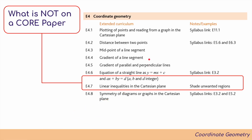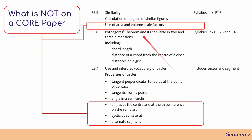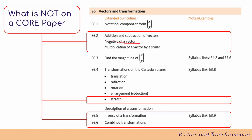For topic four, Coordinate Geometry, linear inequalities in the Cartesian plane — that is, shading unwanted regions — have been added for extended. In topic five, Geometry, the first part remains the same, but the second part adds the use of area and volume scale factors. When covering properties of circles, three additional elements are added for extended. For topic six, Vectors and Transformations, we add addition and subtraction of vectors, negative of a vector, multiplication of a vector by a scalar, and the transformation stretch. Inverse transformations and combined transformations have also been added.